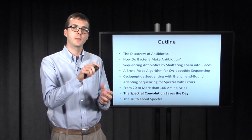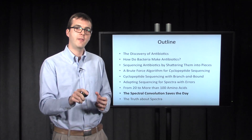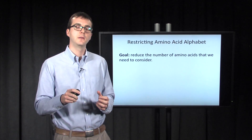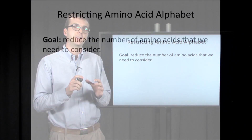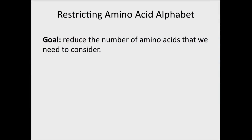Is there something that the spectrum is telling us that we just haven't been listening to? Our goal is to get the number of amino acid masses that we consider down — we've got to reduce these. We've got to go from 144. Wouldn't it be nice to knock that down to 50 or 20 or even 10 in a great scenario?